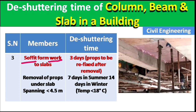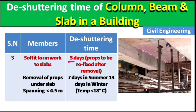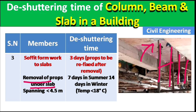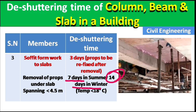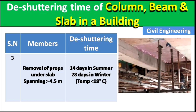Next point is for slabs. The soffit formwork to the slab — the wooden part supporting the concrete slab — can be removed after 3 days, but props must be refixed after removal. For removal of props under slabs spanning less than 4.5 meters, they should be removed after 7 days in summer and 14 days in winter.